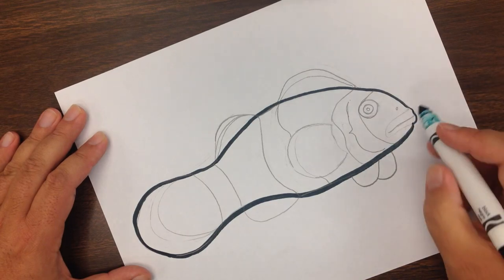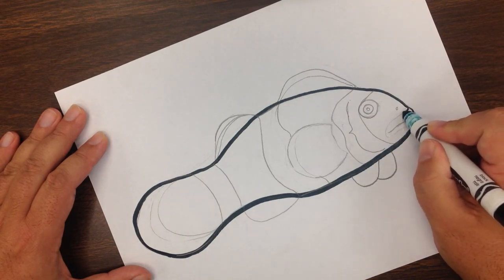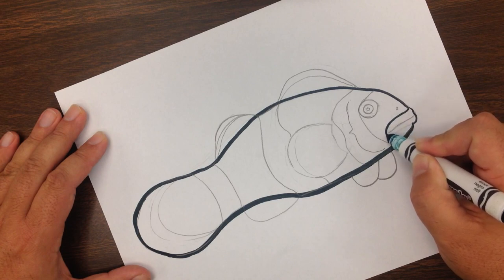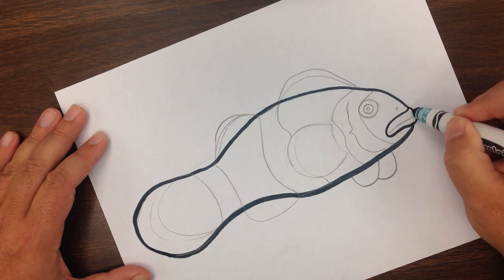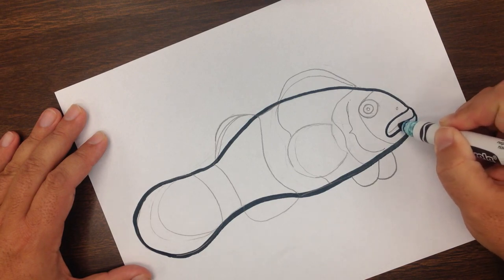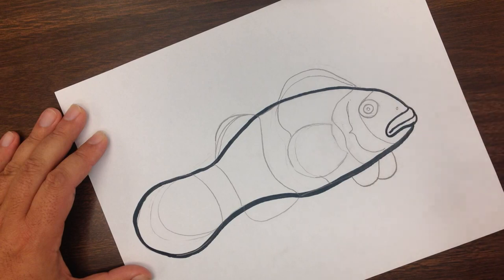The lips, as you can see, they kind of come out a little bit. And we want to make those lips look pretty thick and then make it turn down just a little bit slightly in the corner to kind of give it that grumpy look that the clownfish have.